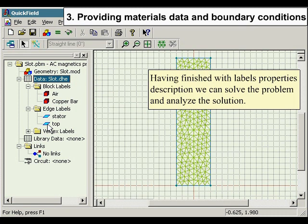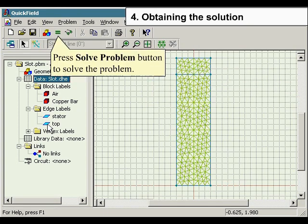Having finished with labels properties description, we can solve the problem and analyze the solution. Obtaining the solution. Press solve problem button to solve the problem.